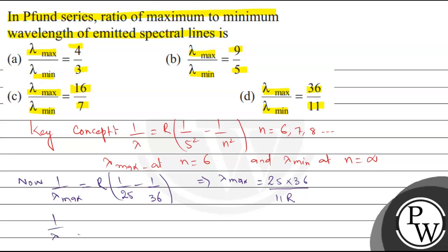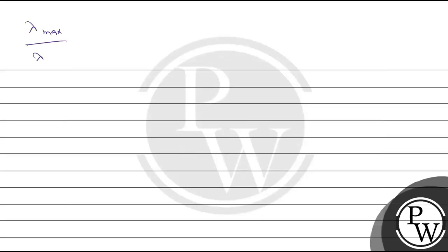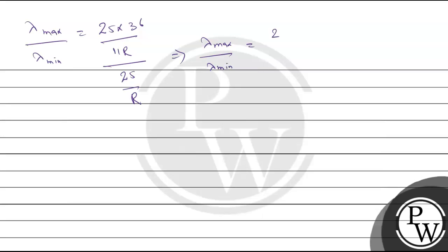Similarly, for λmin at n = infinity: 1/λmin = R/25, so λmin = 25/R. Now we have λmax = 25 × 36/(11R) and λmin = 25/R.